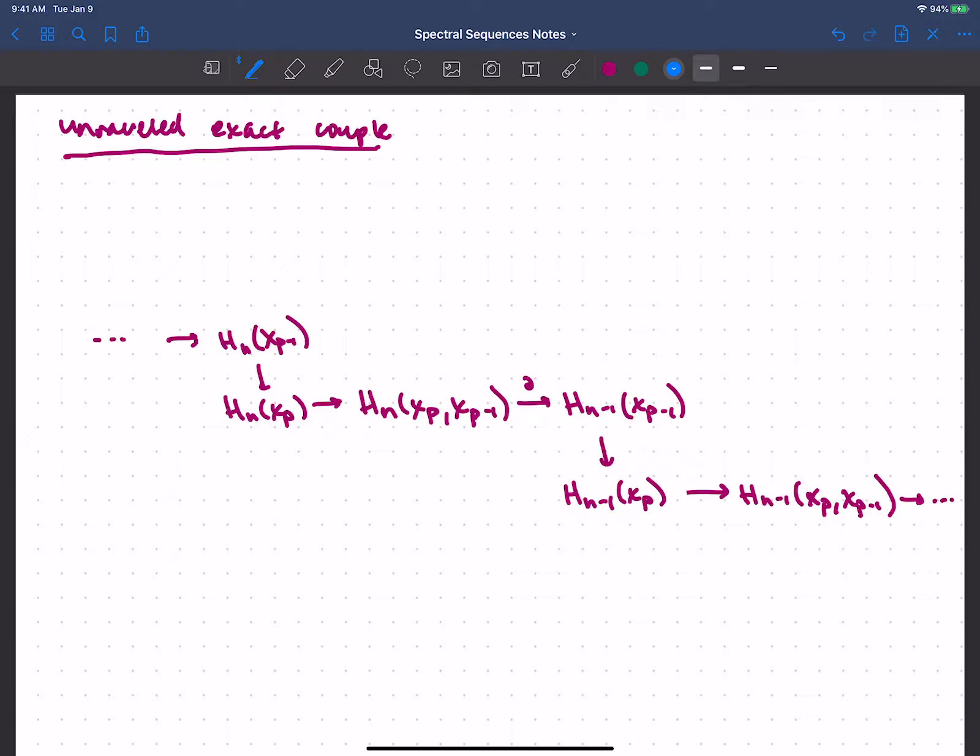But of course I have this filtration for many pieces, and so HN of XP minus 1 fits into a different long exact sequence. In particular, I've got this map HN of XP minus 2, because XP minus 2 includes into XP minus 1. And then I've got this map to the relative homology. And that maps down to HN minus 1 of the smaller thing. And then that maps to HN minus 1 of the larger thing, which was the smaller thing in the previous sequence. And so really I just want to color this with both colors. So I'm doing an underline here to say that this group lives both in the blue long exact sequence and also in the maroon long exact sequence.